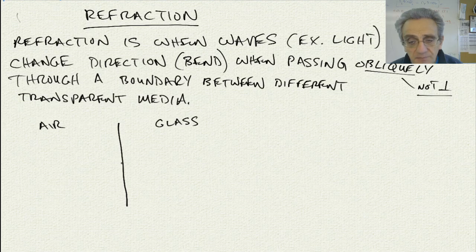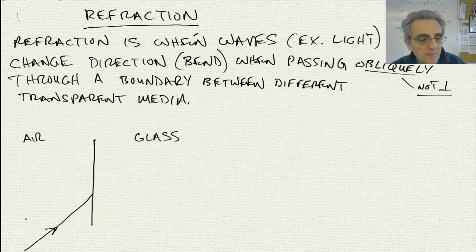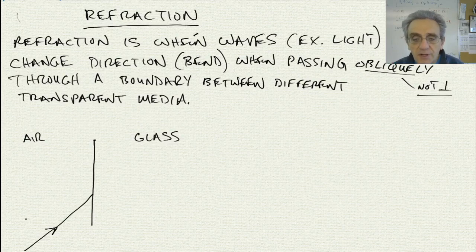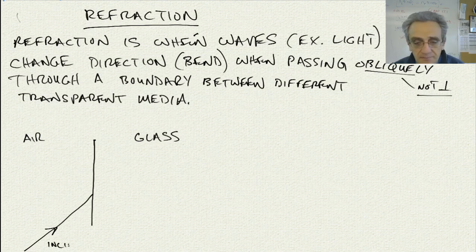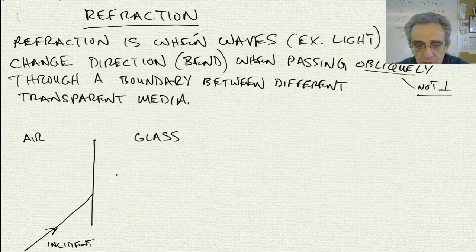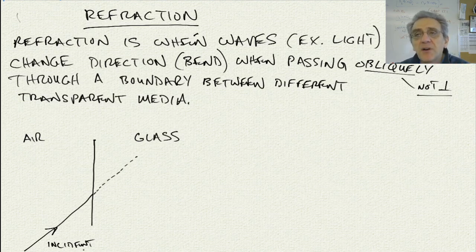We'll draw a light ray coming from the air, with glass on the right-hand side. This here is my incident ray. If it did not change directions, it would go through straight. But it does change directions, and we have to figure out which direction it bends towards.